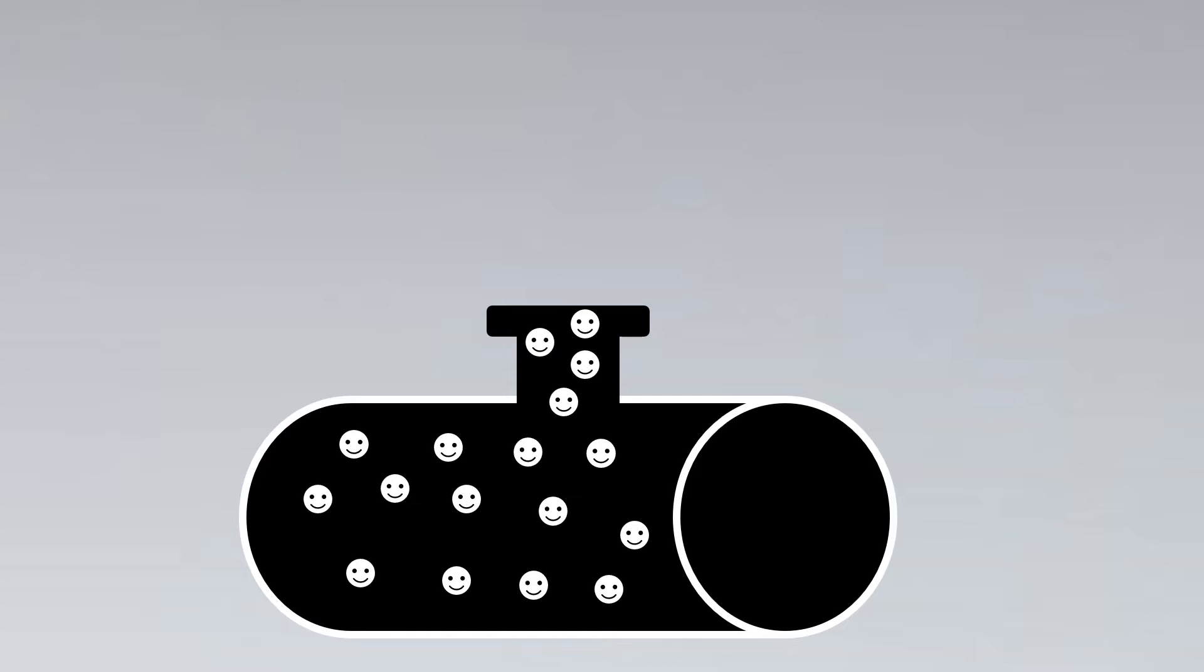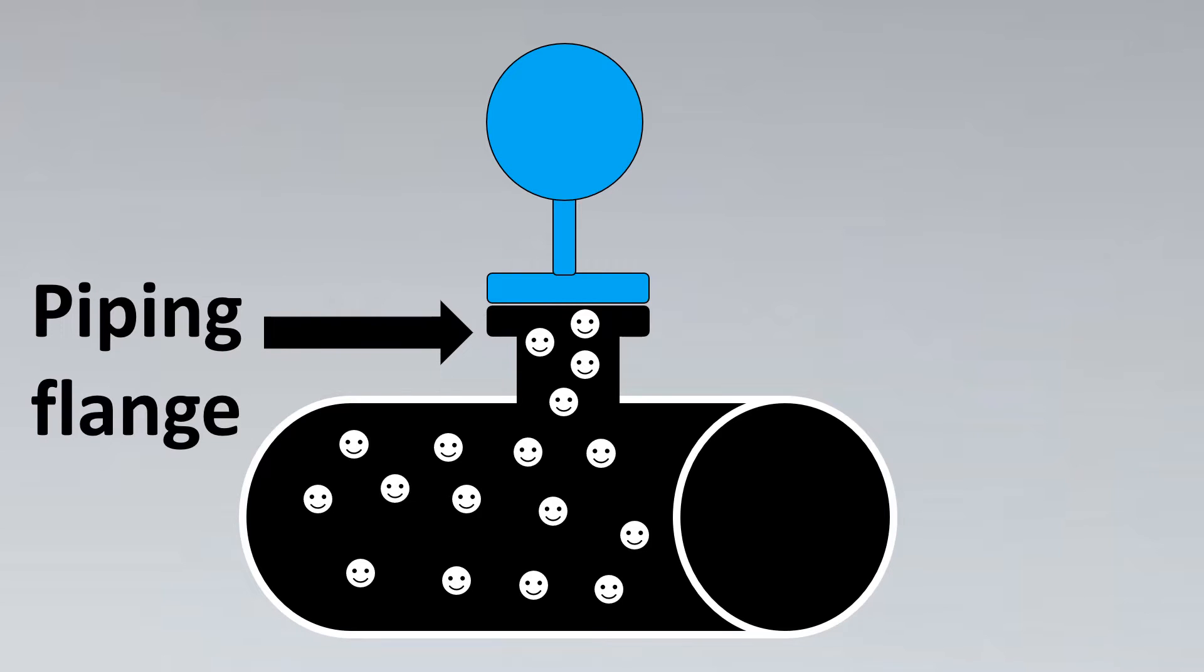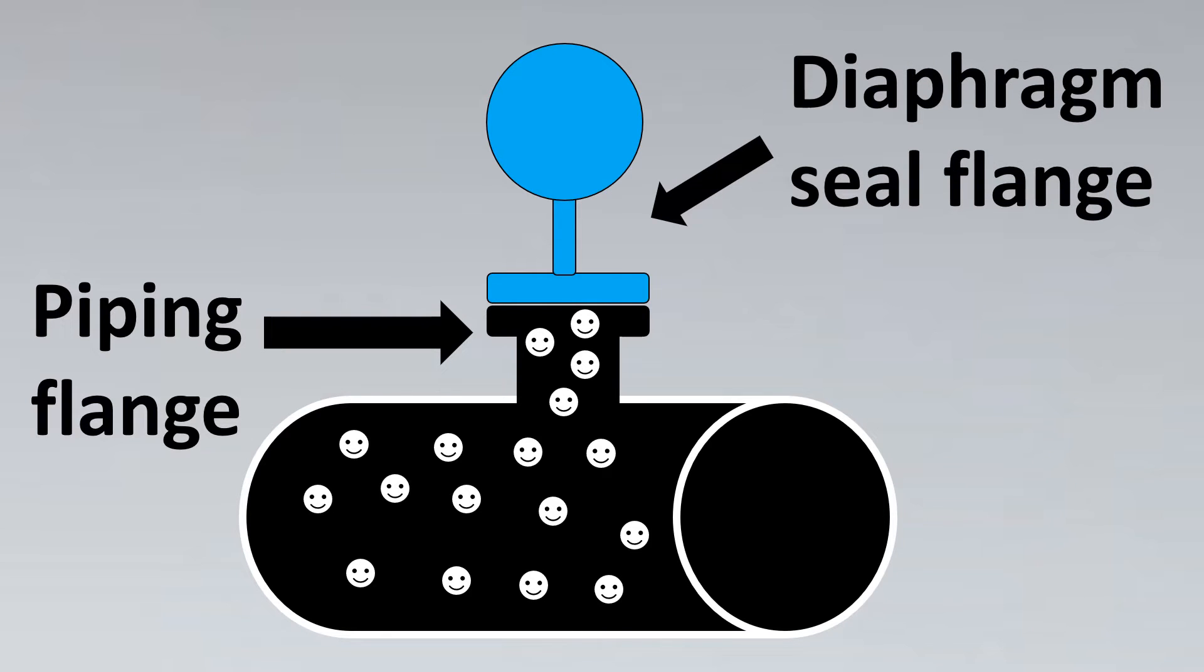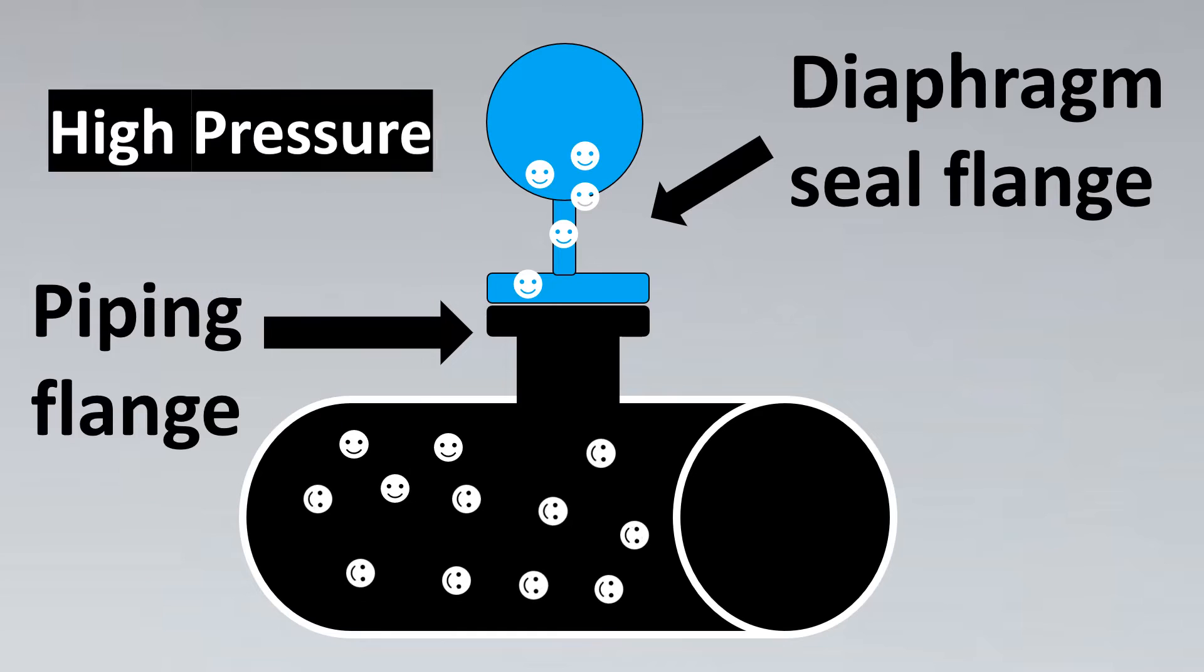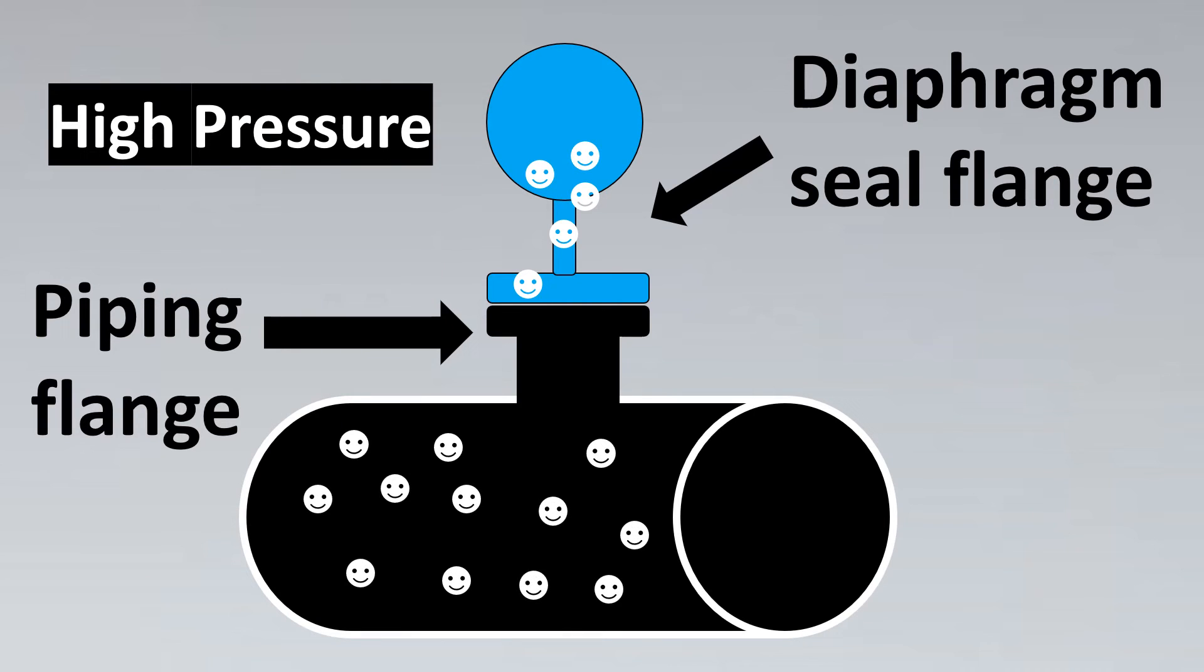Let's imagine this is our hydrogen service and here our diaphragm seal is put. This is our piping flange and this is our diaphragm seal system. In such cases, if the hydrogen is broken because of high pressure, these molecules will travel up to the diaphragm. Once they get there, because the hydrogen molecules are very minuscule in their size, they can permeate through the diaphragm flange.